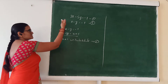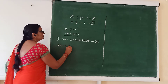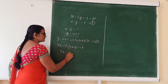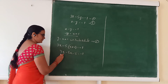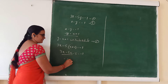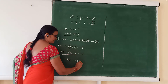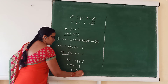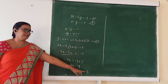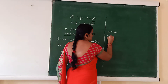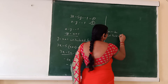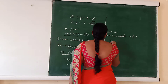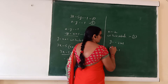Substituting gives 3x minus 5 times (x plus 1) equal to minus 1. Simplifying: 3x minus 5x minus 5 equals minus 1, so minus 2x minus 5 equals minus 1, minus 2x equal to 4, then x equal to 4 divided by minus 2. Therefore x equal to minus 2. Substituting x equal to minus 2 back into equation 2 gives y equal to minus 2 plus 1, so y equal to minus 1.